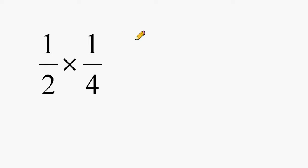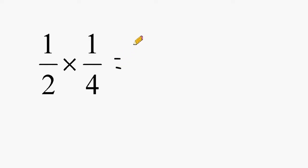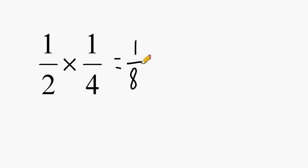In the first example, we have the fraction 1 half multiplied by 1 fourth. To quickly get your answer, all you have to do is multiply the numerator by the numerator to get your numerator — 1 times 1 is equal to 1 — and then multiply the denominators together: 2 times 4 is equal to 8. So 1 half multiplied by 1 fourth is equal to 1 eighth.